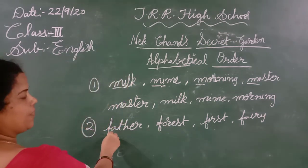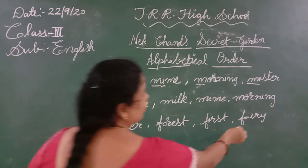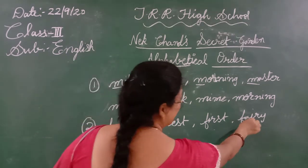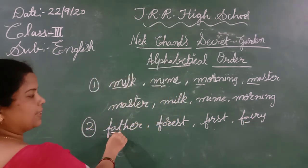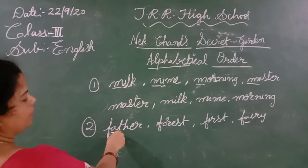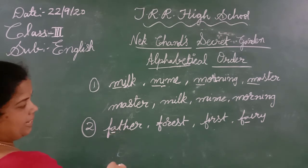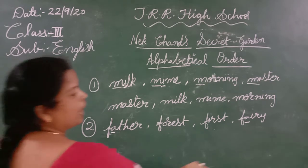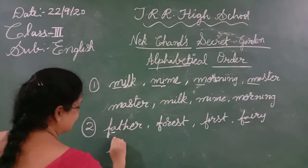Looking at the second letters: father has A, fairy also has A. So again we have to go to the third letter. Going through the alphabet — A, B, C, D, E, F, G, H, I — fairy has I as the third letter, so we write fairy as the first word.